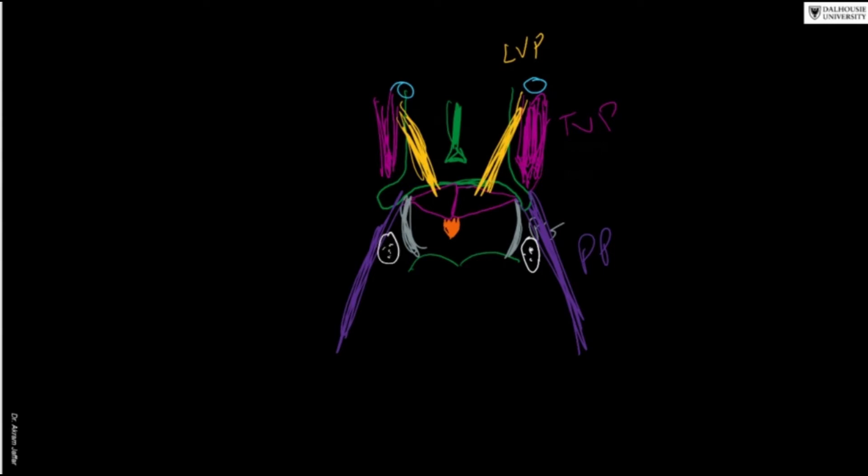These muscles are all supplied by the vagus nerve, except for the tensor veli palatini, which is supplied by the mandibular division of the trigeminal nerve.